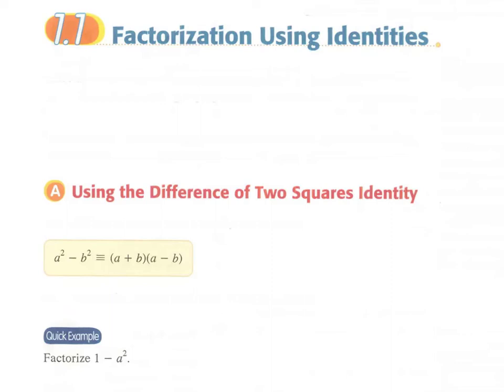Hello, form two students. In this section we are going to talk about factorization using different identities. By now in form two, you should have learned some before. For example, we have a method called taking out the common factor.